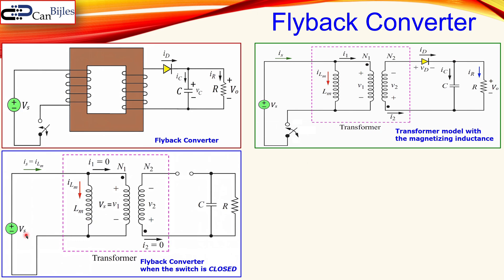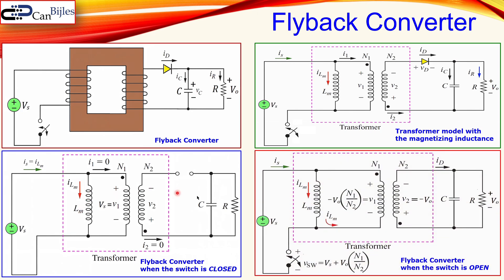Now we discuss the two operations. First, when the switch is closed, the Vs is across the complete Lm and also across the primary winding. Since this is the plus voltage, the diode will be reverse biased — meaning the secondary winding connection is opened. So there is no current in the secondary winding, i2 is zero, i1 is also zero, and the source current equals the magnetizing inductance current.